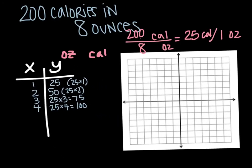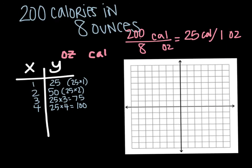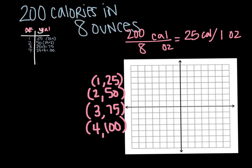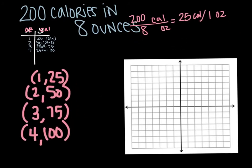Now that I have these, I can use these as coordinates, so my x and my y. So I have x is 1, y is 25. x is 2, y is 50. x is 3, y is 75. x is 4, y is 100. I'm going to use those coordinates now to plot my graph.